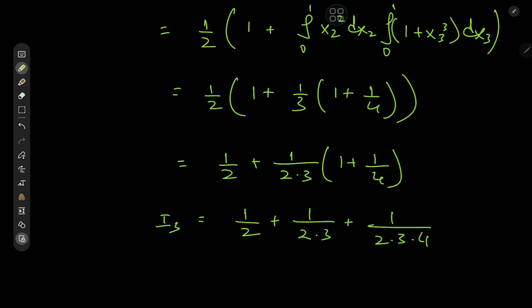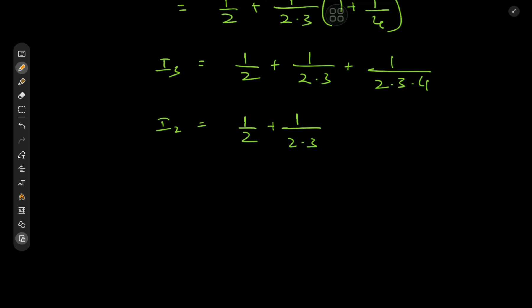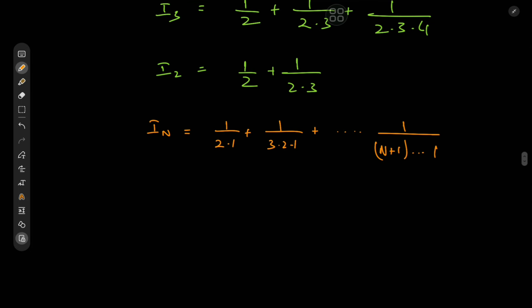And now we can infer a pattern. The pattern is pretty much screaming at us in the face because all we have to do is even for higher dimensions we just have to keep peeling away one variable and then integrating. So for the case of I_n we have 1/2 which is 1/(2*1) plus 1/(3*2*1) plus all the way up to 1/(n+1)!. This is in fact quite nice. And now we can introduce those factorials because that means we just have the sum over k from 2 to n+1 of 1/k!, and we're interested in the limiting case as n goes to infinity.